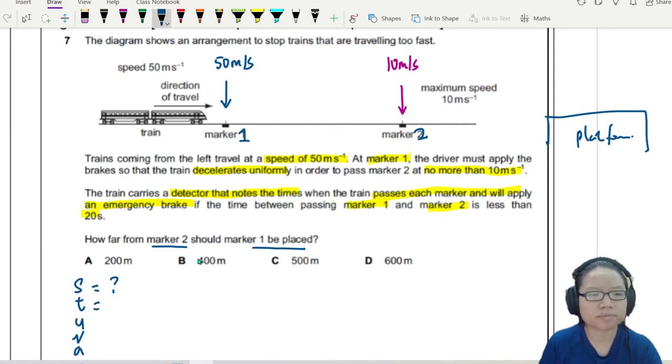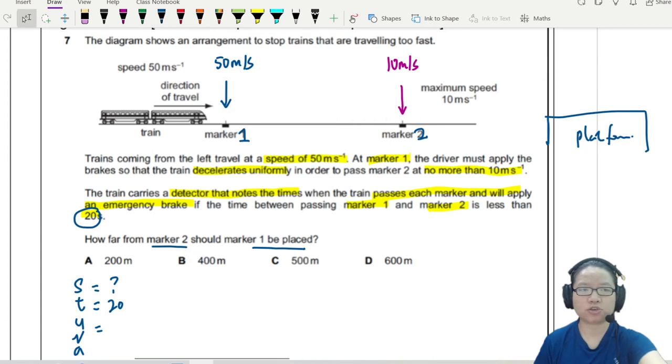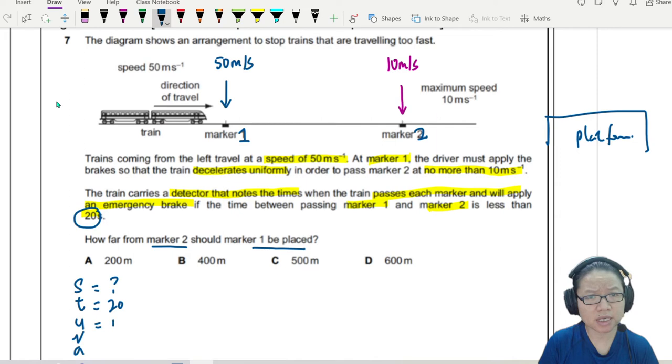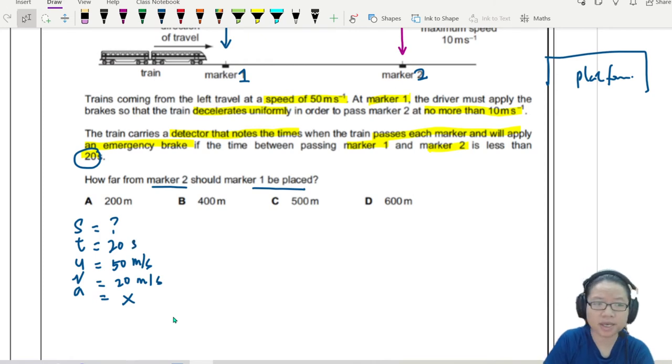It says this one is 20 seconds. So if it's more than 20 seconds means this train is traveling too fast. Initial speed is 50. Final speed is 10. And we know it's uniform acceleration, but we don't have values for A. So before I continue, I just want to make sure that everything is SI first.